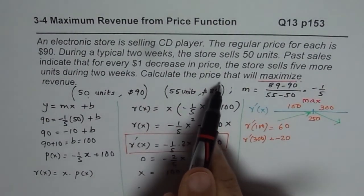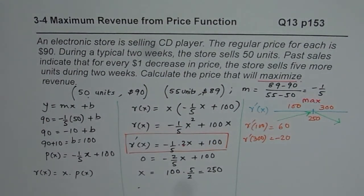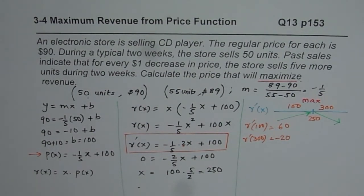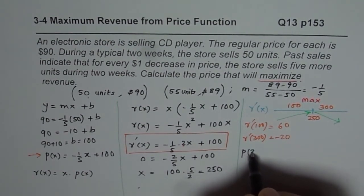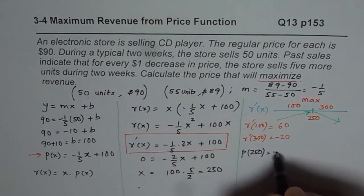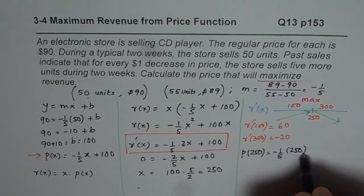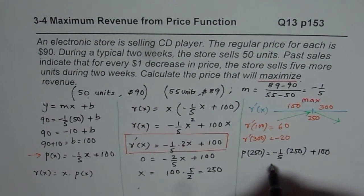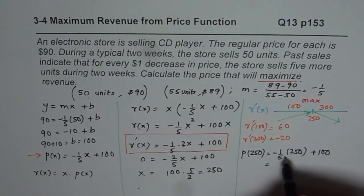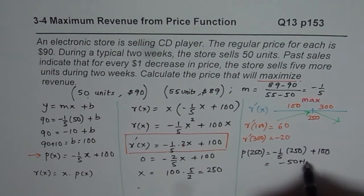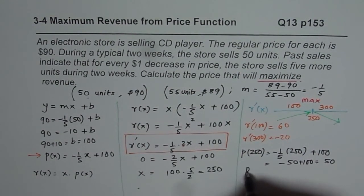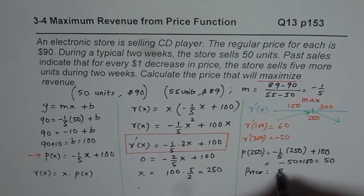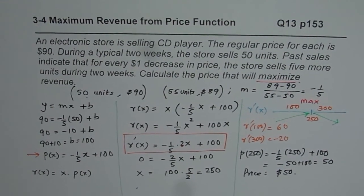The question is, you need to calculate price that will maximize this revenue. So to calculate the price, price function is given to us. So we'll use this particular function now. Price function. So let's find the price for revenue when the number of items being sold are 250. So we'll substitute x as 250. So we have minus 1 over 5 times 250 plus 100. So 1 fifth of 250 is 50. 5 times 5. So it's minus 50 plus 100. That gives us 50 dollars. So therefore, we can say price is equals to dollar 50. So for maximum revenue, price should be 50 dollars.